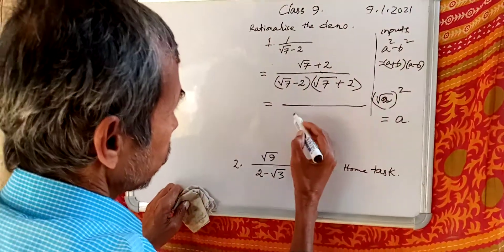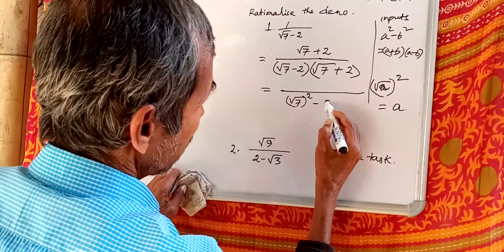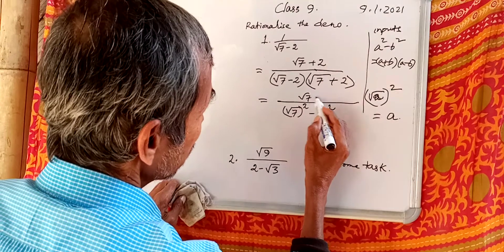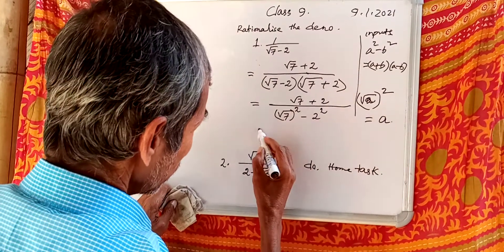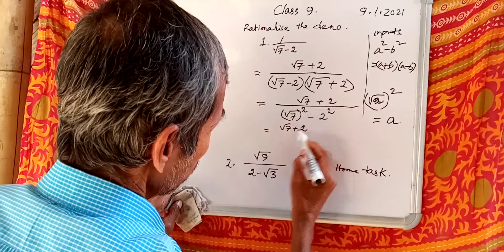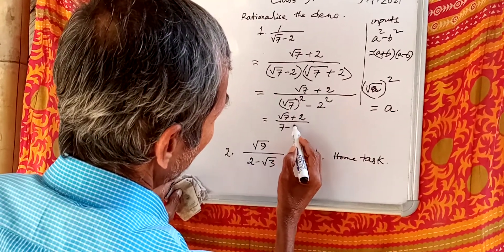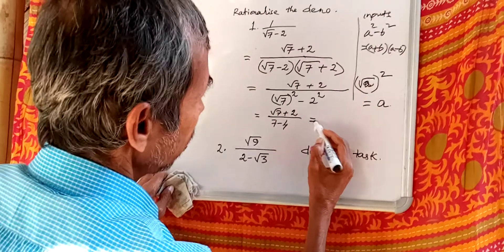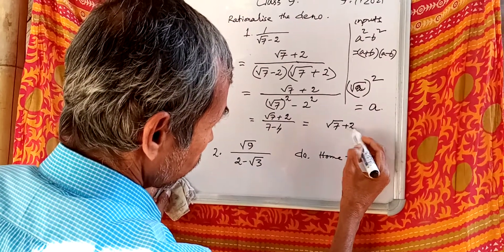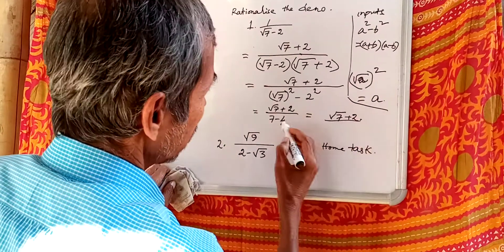So, 1 over root 7 plus 2, multiplying by root 7 minus 2 over root 7 minus 2, gives root 7 minus 2 over root 7 whole square minus 2 squared, which equals root 7 minus 2 over 7 minus 4, equal to root 7 minus 2 by 3.